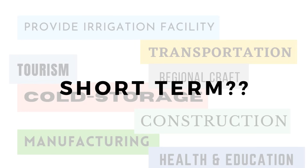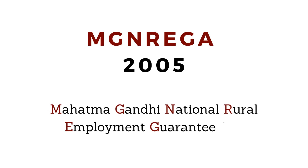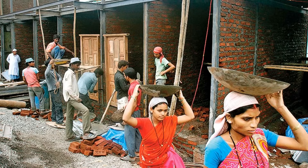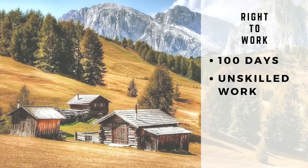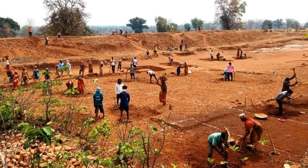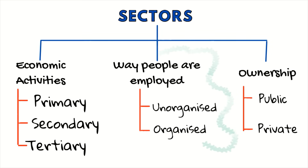These employment-creating measures are long-term solutions. For the short term, the central government introduced MGNREGA in 2005 — the Mahatma Gandhi National Rural Employment Guarantee Act. As the name suggests, it is for rural areas. Under this Act, people have a Right to Work: every household is guaranteed 100 days of unskilled work per year. If the government cannot provide work, it must pay an unemployment allowance. So MGNREGA helps address rural unemployment in the short term.